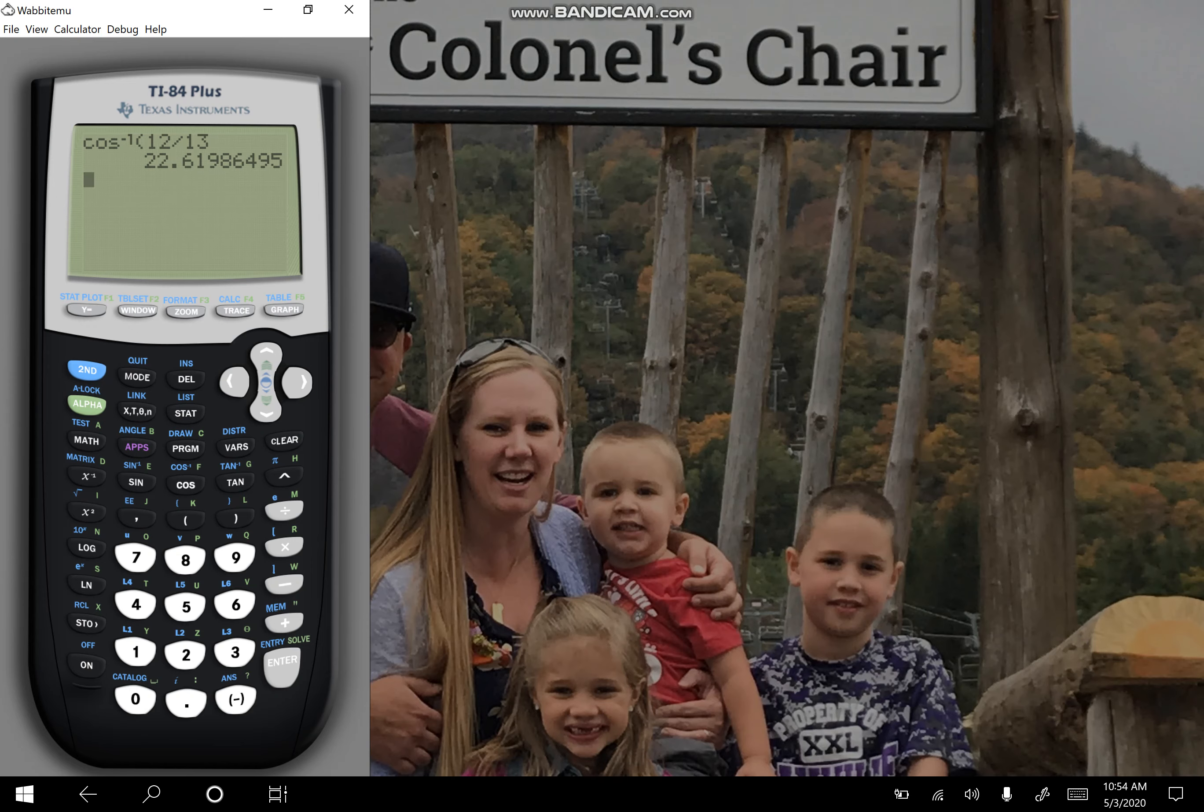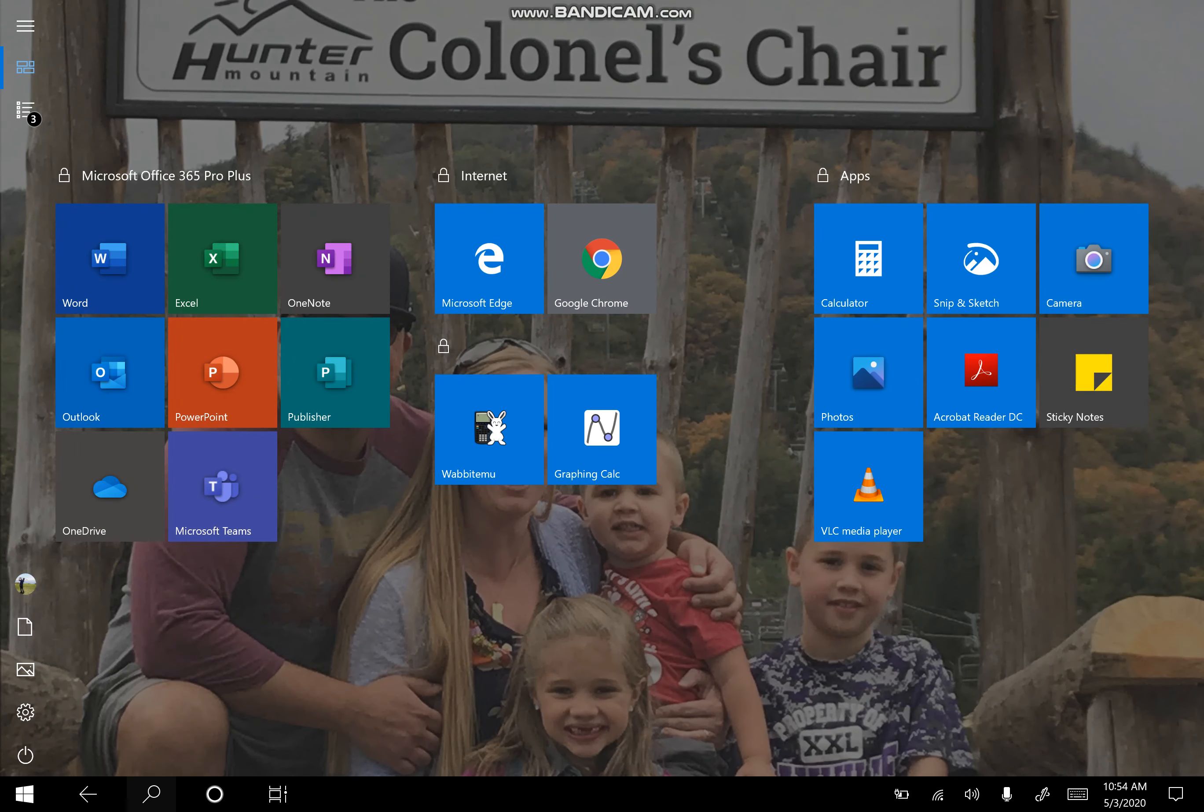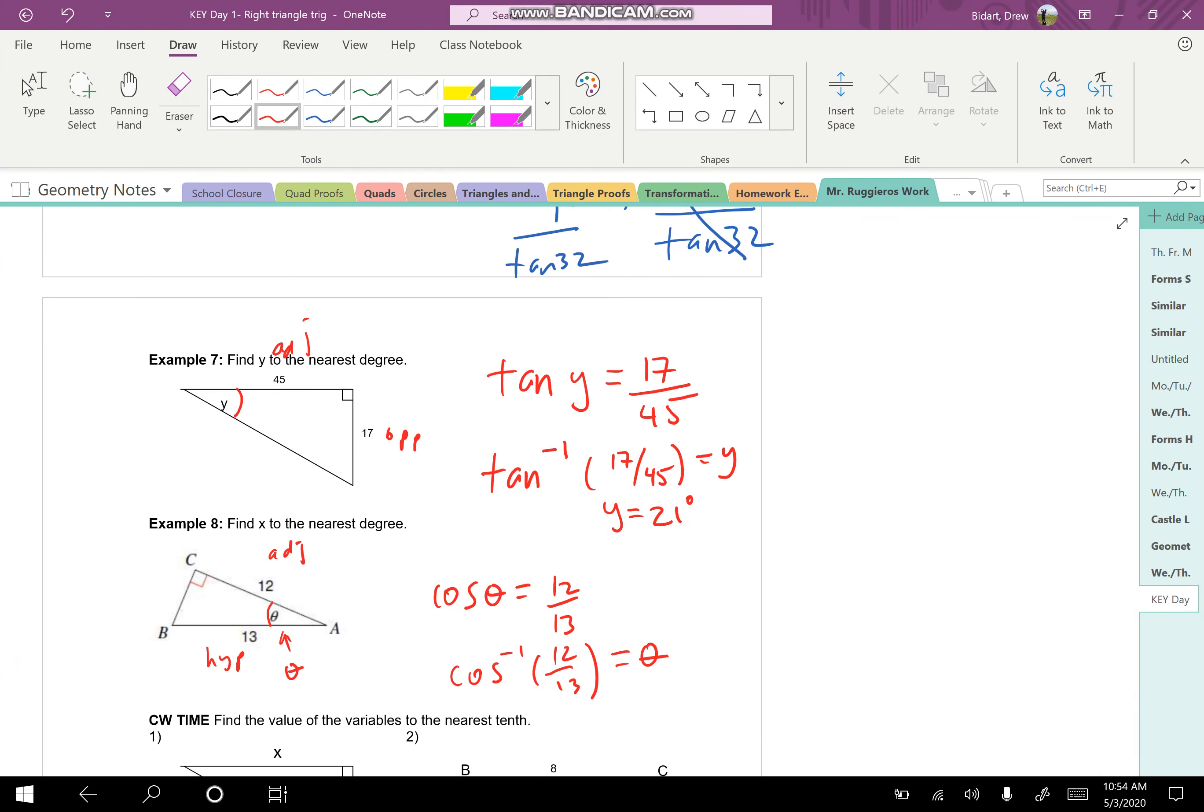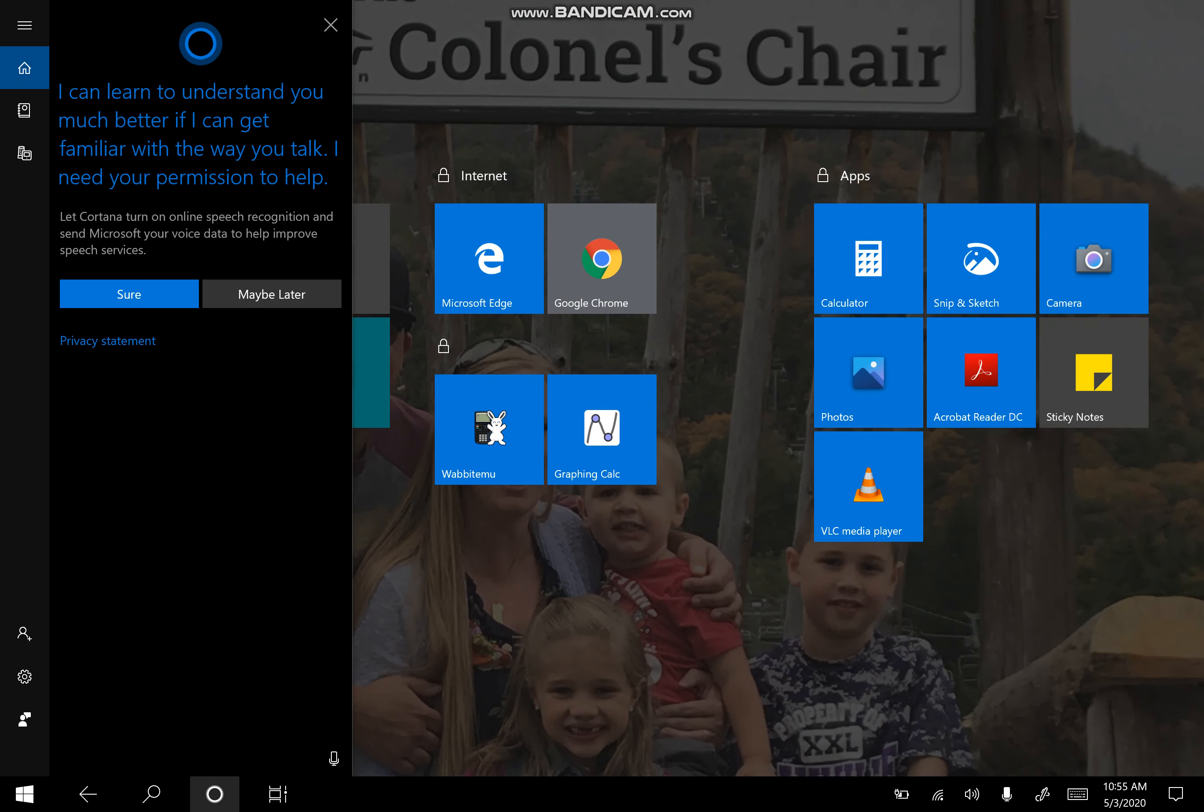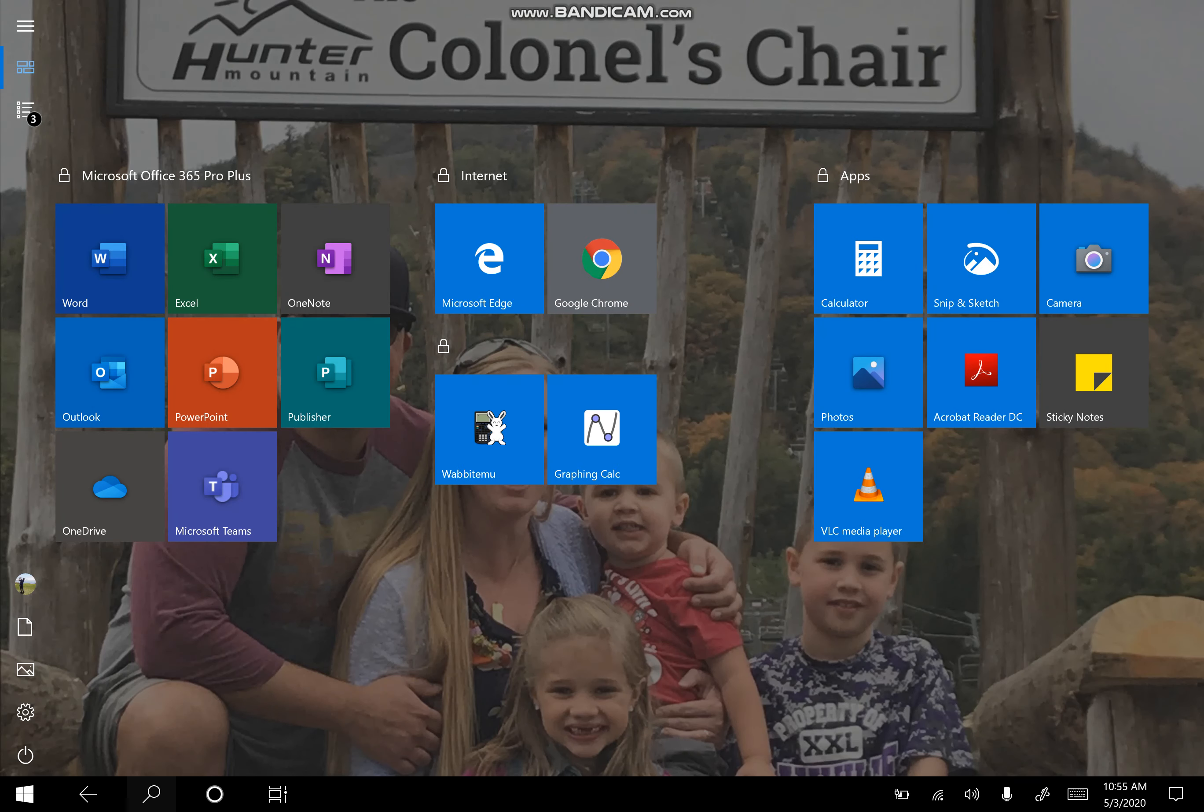This is where I do the inverse. So the second cosine of 12 over 13 is going to give us what theta is. So I go to my calculator. And I'm going to type in second cos of 12 divided by 13. And this is our angle, which is about 22.6.